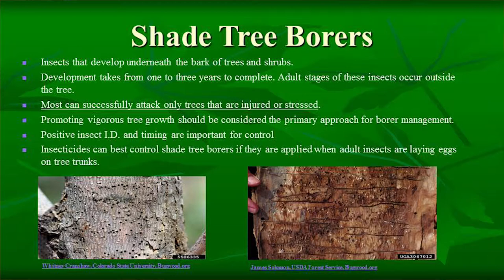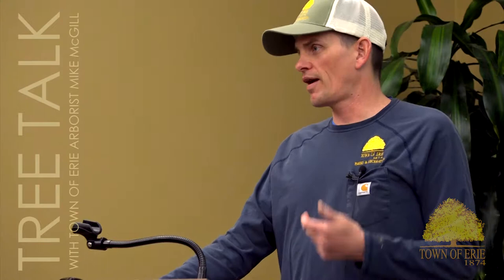Moving on to shade tree borers. I struggle to find an ash tree without any evidence of a borer in it. People hear about emerald ash borer, look at their ash tree, see a borer, and think they have EAB. There are numerous other shade tree borers: lilac ash borer, red-headed ash borer, banded bark beetle, apple tree borer — all working on ash trees even without EAB. Lilac ash borer is highly prevalent on most ash trees, but I'd consider it a 3 on a scale of 10 — a minor insect I don't even treat for.